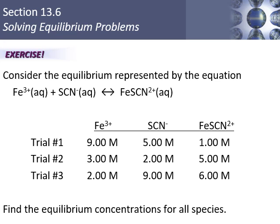We have three more of these to do. For the first: add 3 to the product, subtract 3 from the reactants, giving equilibrium values of 4, 6, and 2 — yielding 4/12 = 1/3. For the second: the system actually needs to go in reverse by 1, giving equilibrium values of 4, 4, and 3 — yielding 4/12 = 1/3. For the third: the values are already correct — no change needed.